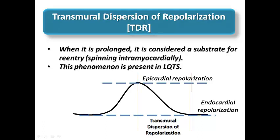When patients have long TDR — as seen in long QT syndrome — this increases susceptibility to ventricular tachycardia and Torsades de Pointes, which can cause sudden cardiac death. In patients with long QT syndrome, a wide-based T-wave may be considered a high-risk sign for Torsades de Pointes. This interval is called transmural dispersion of repolarization.